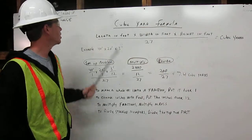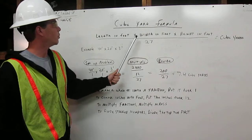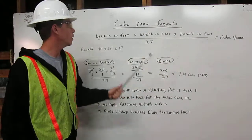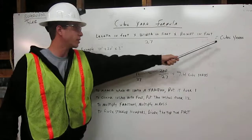Cubic yard formula: length in feet times width in feet times height in feet over 27, which gives us our cubic yards.